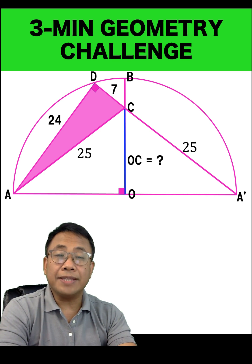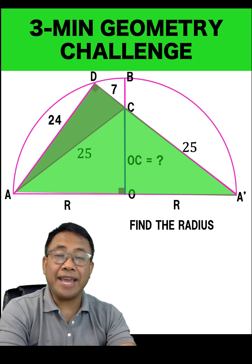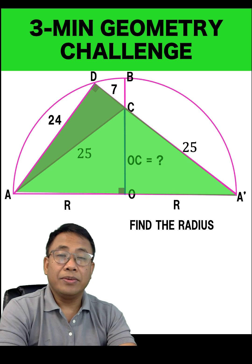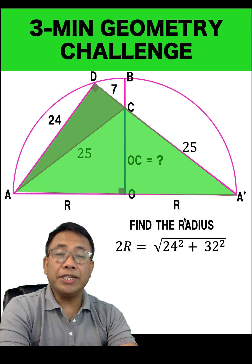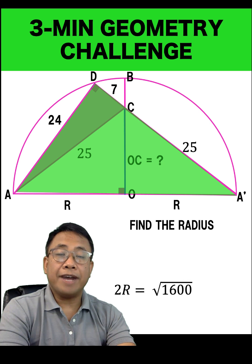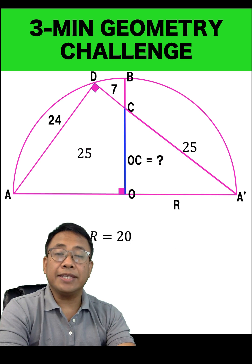Next, let's find the radius of this semicircle. Let's label radius OA as R and radius OA' as R also. Now let's concentrate on the big right triangle ADA'. We know that AD is equal to 24 units, CD is equal to 7 units, and A'C is 25 units, which gives us the length of leg A'D to be 32 units. Since this triangle is a right triangle, we use the Pythagorean formula again. The hypotenuse is 2R, equal to the square root of the sum of the squares of 24 and 32. Solving for 2R, we get 40, and solving for R, R is equal to 20. So the radius is 20 units.